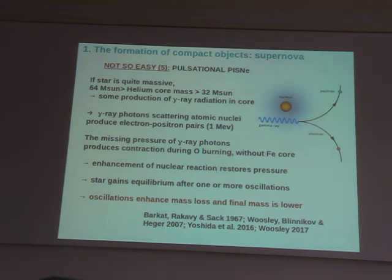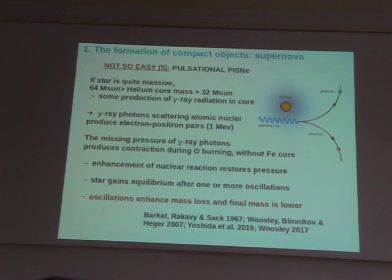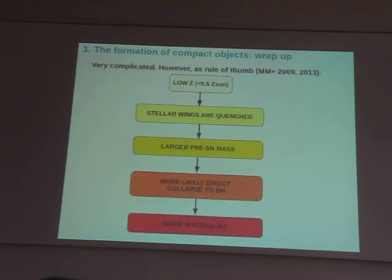These oscillations are not a disruptive explosion, but they lead to an enhancement of mass loss. The star will lose mass not only by stellar winds but also by these pulsational pair instability oscillations. This means that the final mass of the star before it dies by core collapse supernova will be lower.